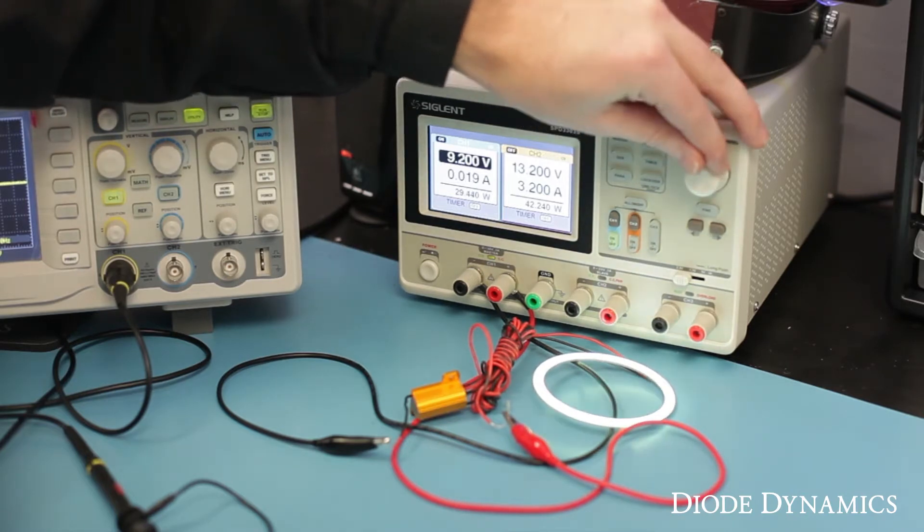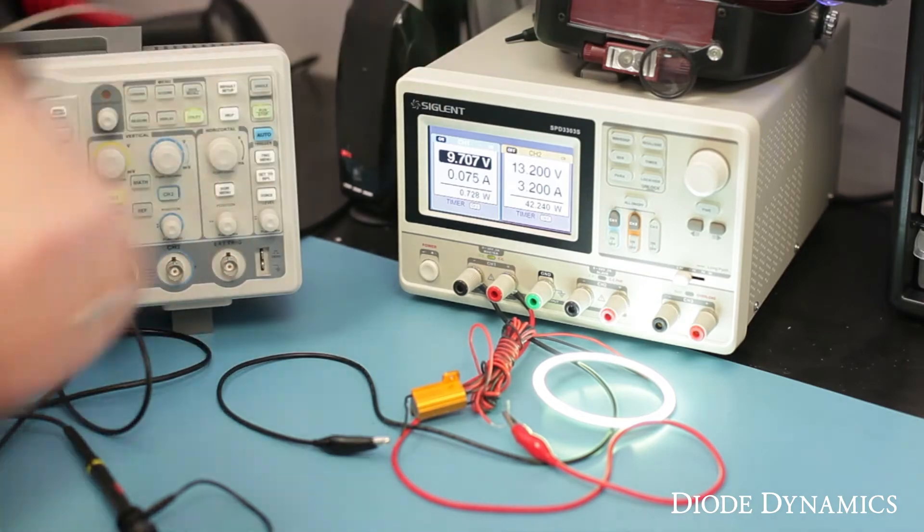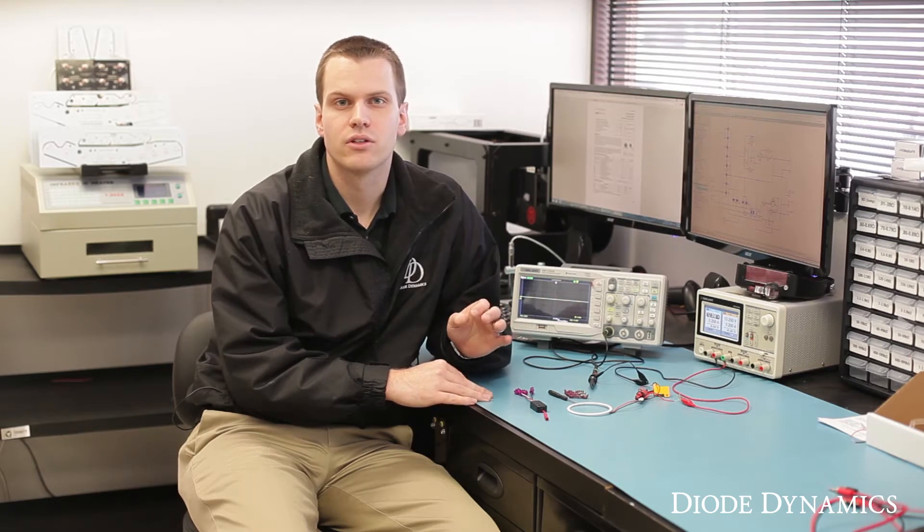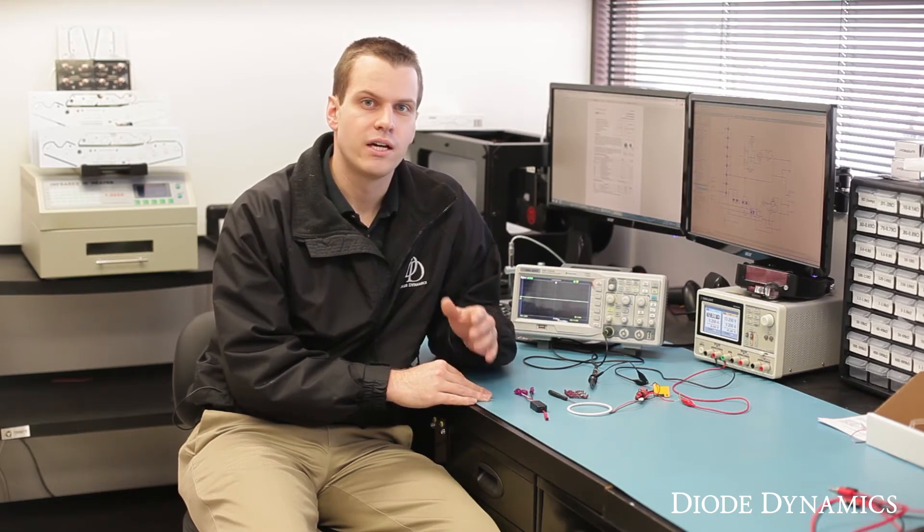However, this method is not ideal because you are wasting the extra 6 volts of power in the resistor. Also, most newer LED drivers are designed to stay on one brightness level even with changes in voltage, so they're not going to dim evenly. It will be difficult to keep the brightness right where you want it.